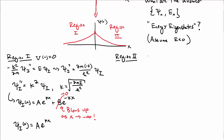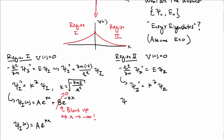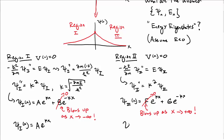Now let's do the same thing for region 2. Again, in region 2 the potential is 0. The Schrödinger equation looks the same, except now we have psi 2 double prime equal to E times psi 2. So the process is the same, giving psi 2 double prime equals k squared psi 2 with the same k. Solutions look like F e to the kx plus G e to the minus kx. Again in region 2 we set F equal to 0, because the e to the kx term blows up as x goes to positive infinity. So psi 2 of x equals G e to the minus kx in region 2.